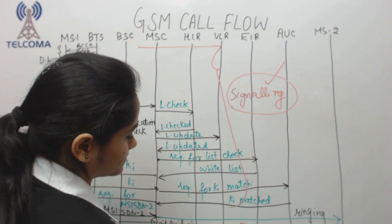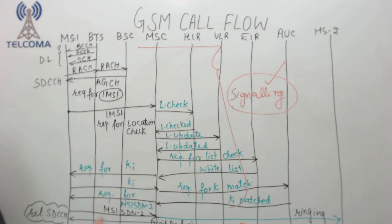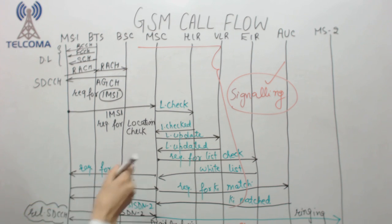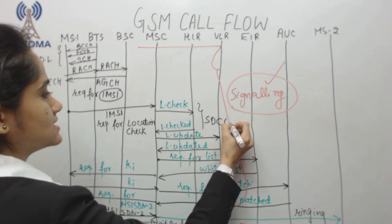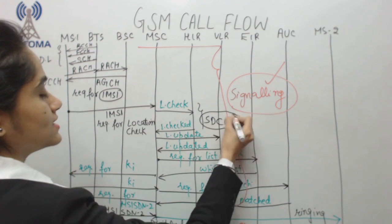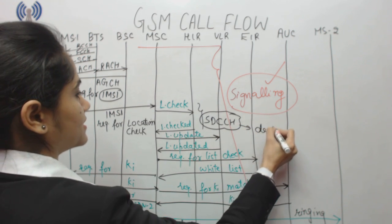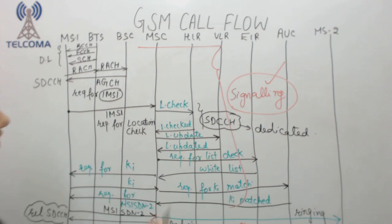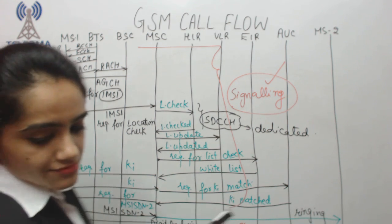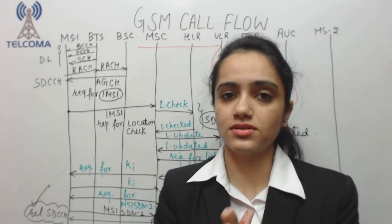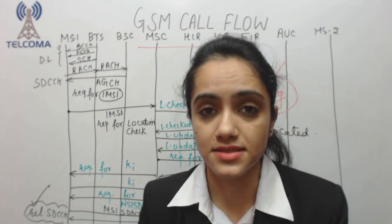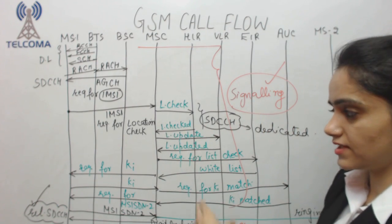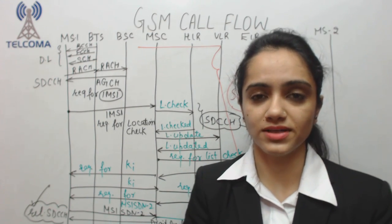To summarize: before ringing, everything happening is part of the signaling process — controlling, checking, authentication, and location updates. After that, the TCH carries the final conversation. Each message in the call setup is carried on the SDCCH, which is a dedicated channel active until the call is established. If there is an interruption during signaling, it is called an SDCCH drop; if there is an interruption during the call, it is called a TCH drop.